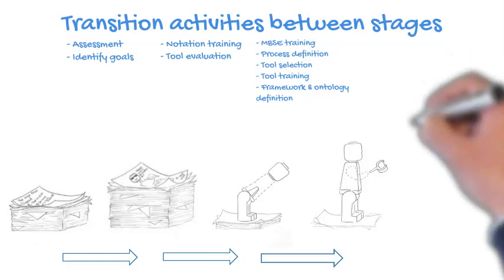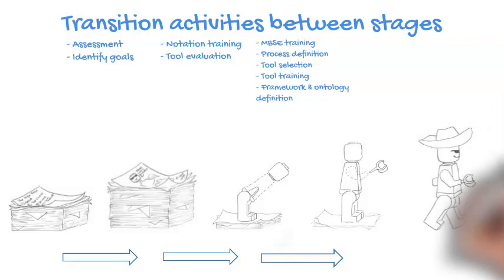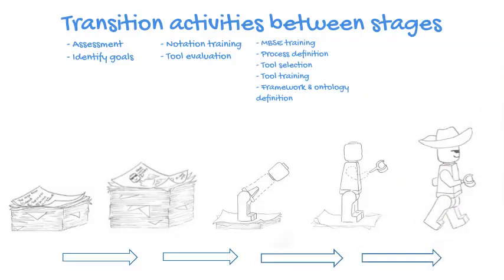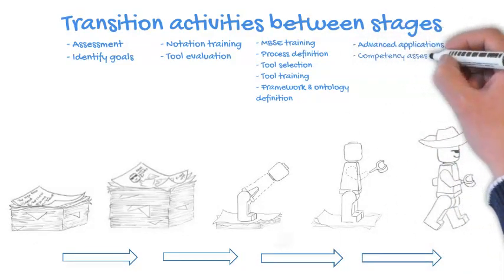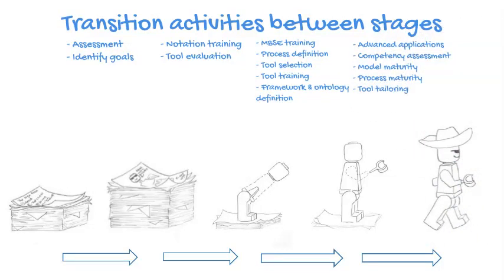The transition from stage 4 (model-centric) to stage 5 (model-based) involves advanced applications: competency assessment for our people, model maturity, process maturity, and tool tailoring. All these different types of activities come into play at this point.